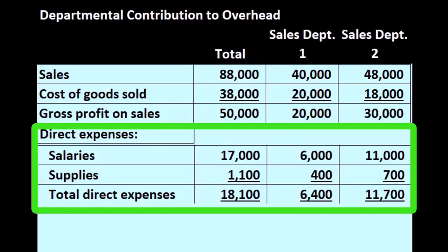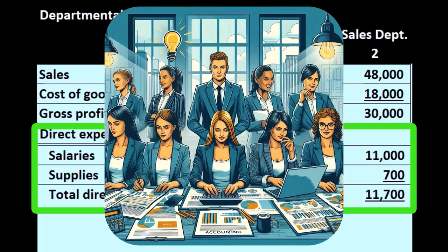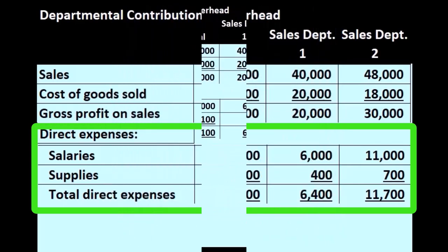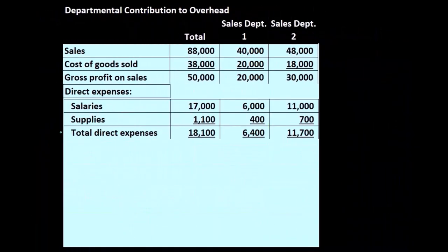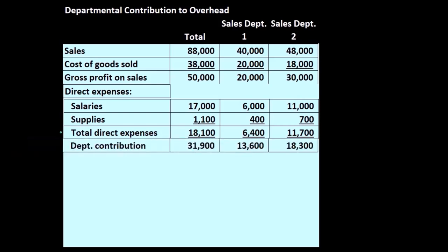That gives us the total direct expenses — we give a subtotal here, which is a bit different than a normal income statement because we're trying to get more information by department. A normal income statement is really geared for the entire company as a whole. Here we're looking at departments, wanting to break the numbers out differently so we can apply them to departments and hopefully make better decisions.